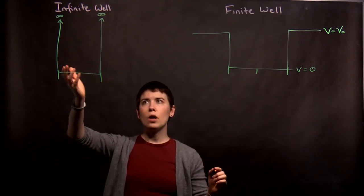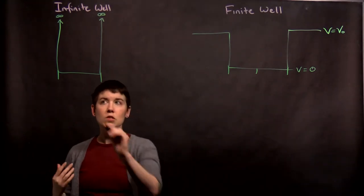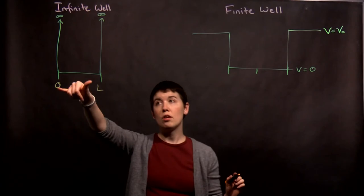And so for the infinite well we basically say, okay, V is zero in the center and then infinite everywhere else. And for simplicity we usually call this zero and we call this L. So it's a width of L.